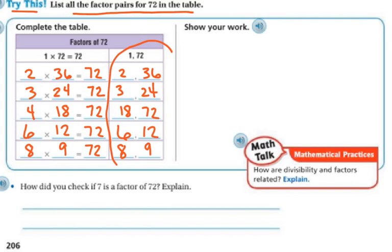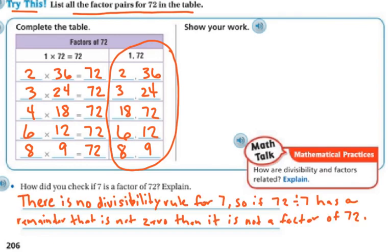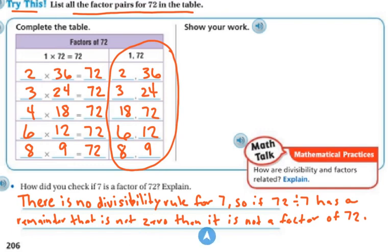Here are all the factors of 72 — it has a lot of factors. How can you check if 7 is a factor of 72? There is no divisibility rule for 7. So if 72 divided by 7 has a remainder that's not 0, then 7 is not a factor of 72.